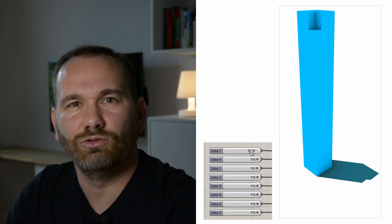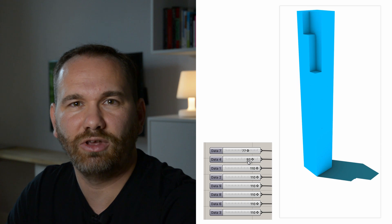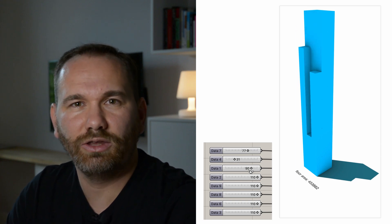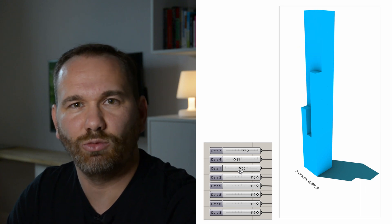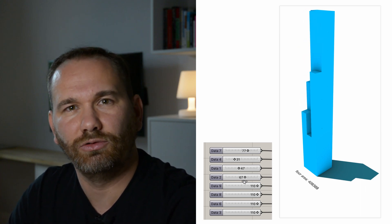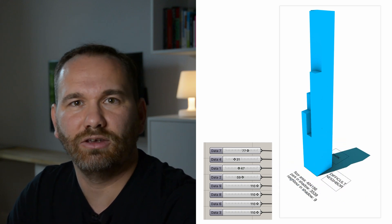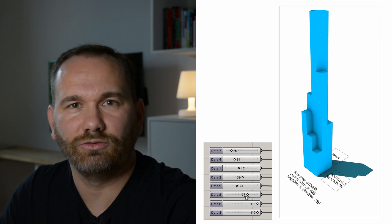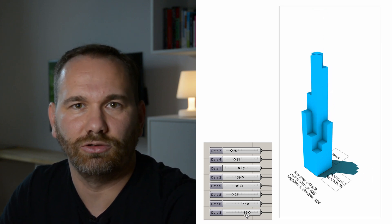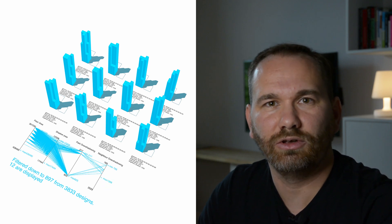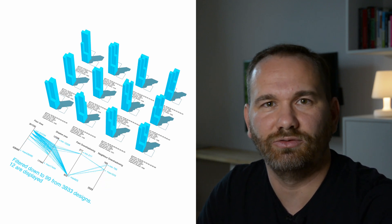To make meaningful use of generative models in your design practice, you need three things. First, you need a parametric model that is able to take multiple states. Second, you need a way to evaluate each of the states based on a given metric, such as the total floor area or the shadow it throws over a neighboring site — anything that can be measured in numbers. In this video, we're also going to take a look at this basic computational analysis. And third, you need a way to browse, sort and filter through all the design options that the computer has generated for you.